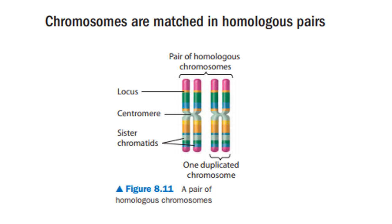Homologous chromosomes carry the same gene at a particular locus. For example, if the purplish area represents the gene for eye color, all four chromatids carry the gene for eye color, but the variant or allele may differ. It can be dominant or recessive.